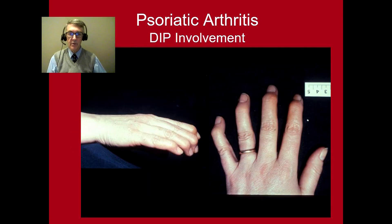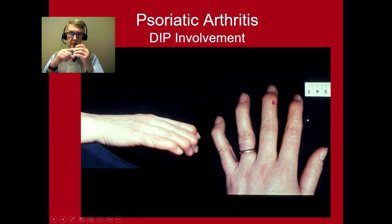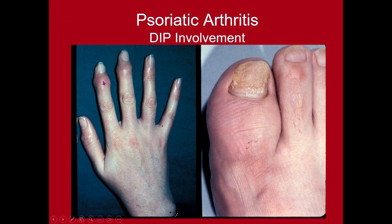This is an example of the DIP involvement that can occur with psoriatic arthritis. You can see the swelling of the distal interphalangeal joints here. This is different than the swelling one sees with osteoarthritis. In osteoarthritis, if you were to palpate the joint it would be very hard, whereas in psoriatic arthritis when you squeeze it, it's soft and smooshy.